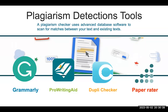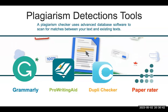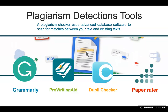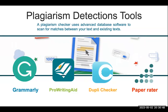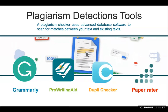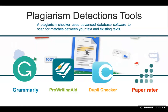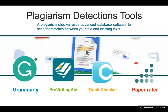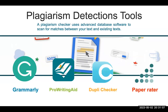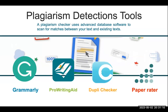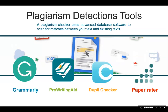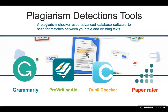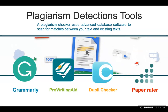ProWritingAid is a smart writing assistant providing personalized advice on writing and plagiarism checks. It can help you write different kinds of paragraphs and gives you advice as well as plagiarism checking. DupliChecker, or duplichecker.com, is a free plagiarism checker supported by ads, with SEO checks including keyword density tools and other useful options.